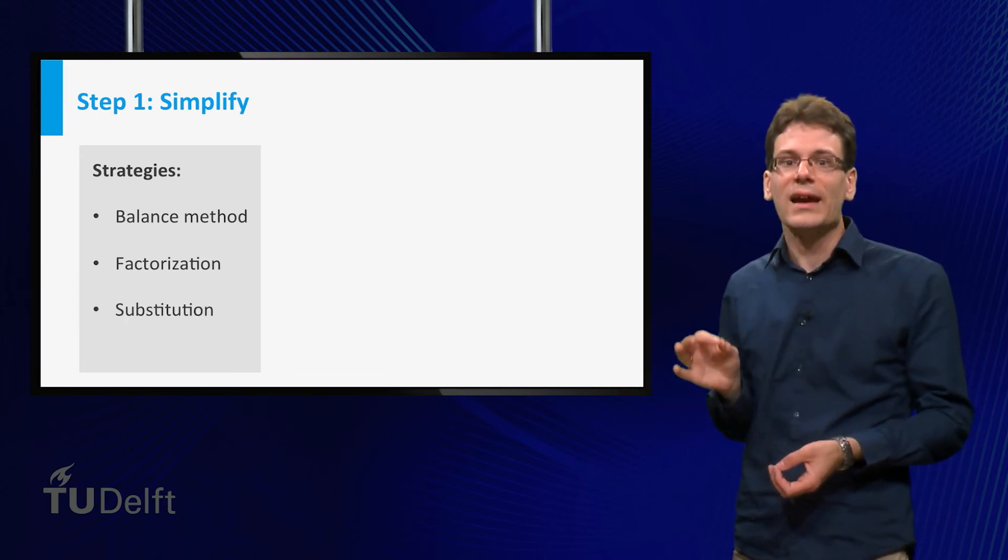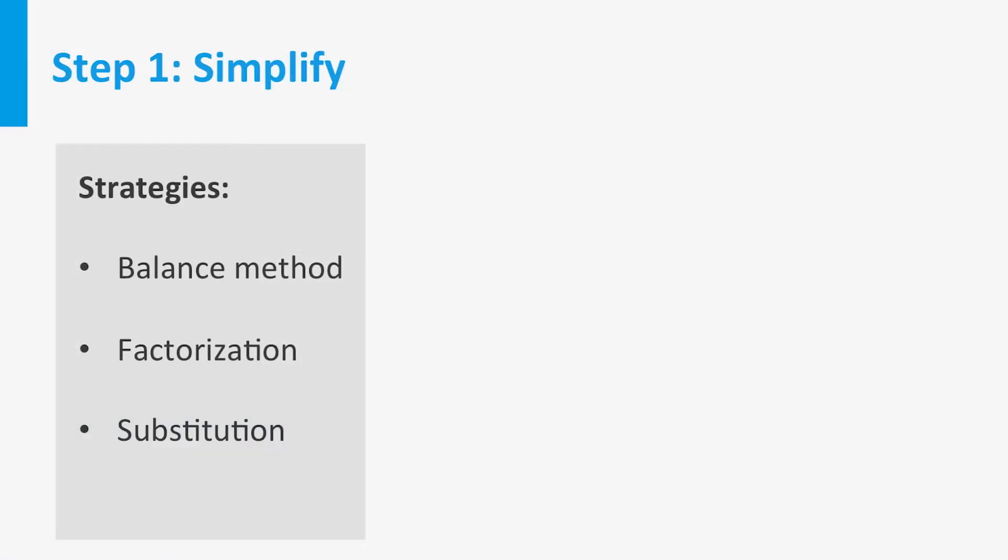The last technique I'd like to mention is substitution. Let me show you an example. Consider the equation x to the power 6 minus 3 times x cubed minus 4 equal to 0. This is a high degree polynomial equation. However, we can rewrite it as follows. Note that x always occurs with the third power.